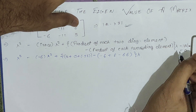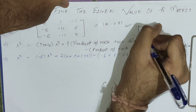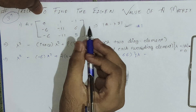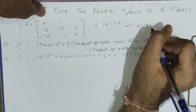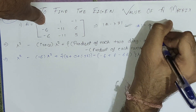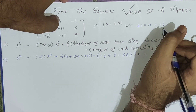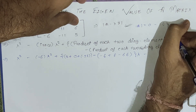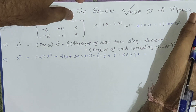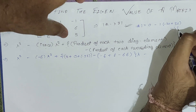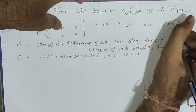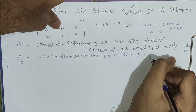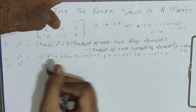Multiply that whole expression by lambda, then subtract the determinant. For the determinant, observe the matrix — no common factor to remove, so use the normal expansion. Zero multiplied by anything is zero; expanding gives minus 30 plus 36, and minus 66 plus 66 equals zero, so the determinant term gives us plus 6. Therefore the constant term is plus 6.